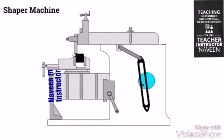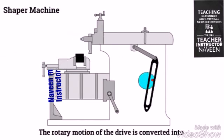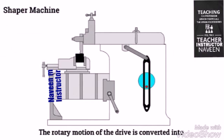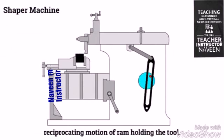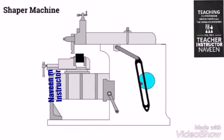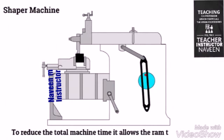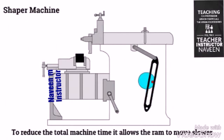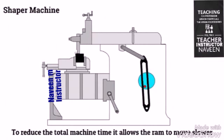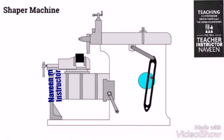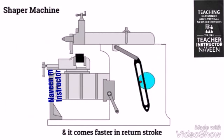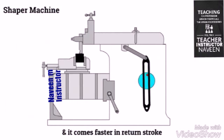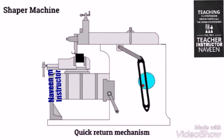In the Shaper Machine, the rotary motion of the drive is converted into reciprocating motion of the RAM holding the tool. Therefore, in order to reduce the total machine time, it allows the RAM to move slower during the forward stroke and it comes faster in the return stroke. This can be achieved by a quick return mechanism.